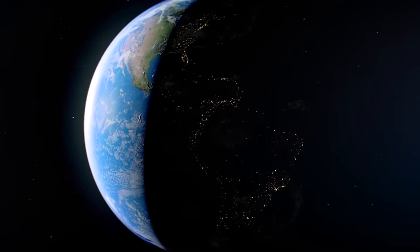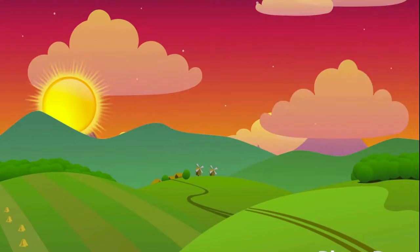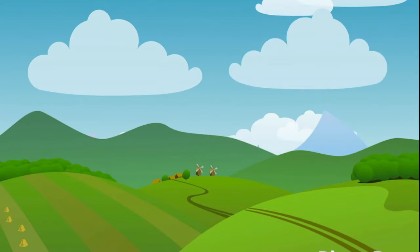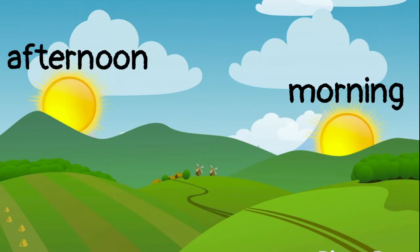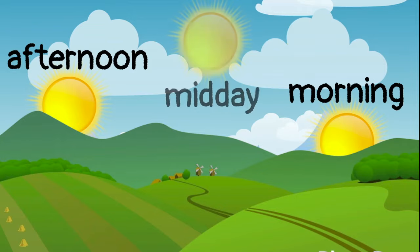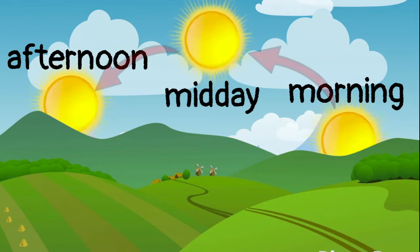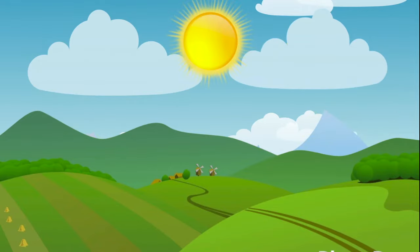Have you ever noticed that the sun appears to change position in the sky throughout the day? In the morning and afternoon, the sun is low in the sky. In the middle of the day, it is almost directly overhead. Is the sun really moving? The sun does not really move through the sky at all.